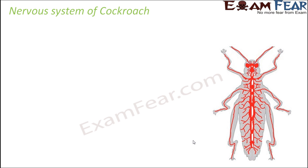Let us now look at the nervous system. Now that we know how digestion, blood circulation, and respiration happen, we should also know how coordination between the nerves takes place in cockroach. Cockroaches have a ladder-like nervous system — as you can see in this picture, it looks just like a ladder.